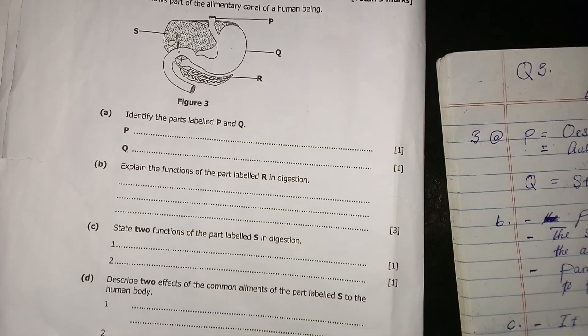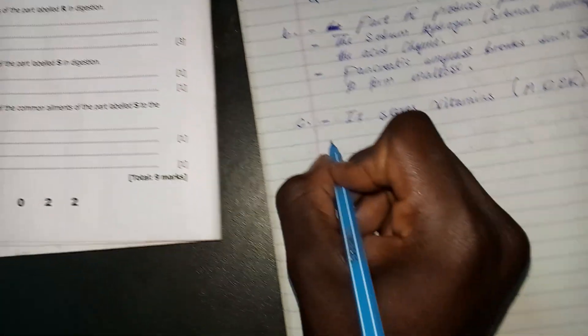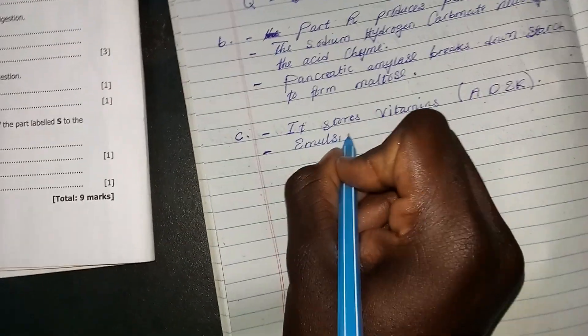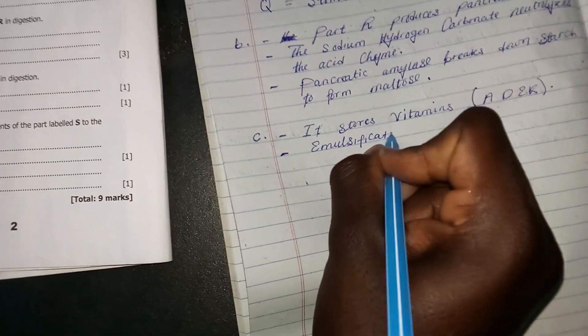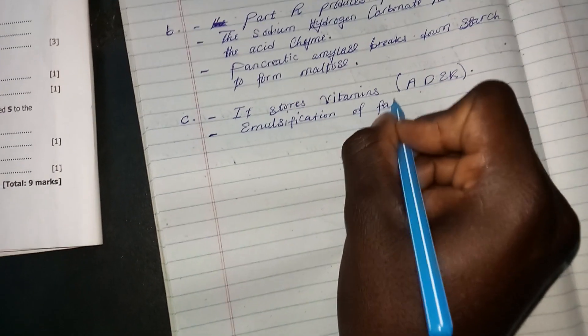The other function played by the part labeled S is to emulsify fats. It plays a role in the emulsification of fats. Emulsification is the breakdown of large drops of fats into small droplets.